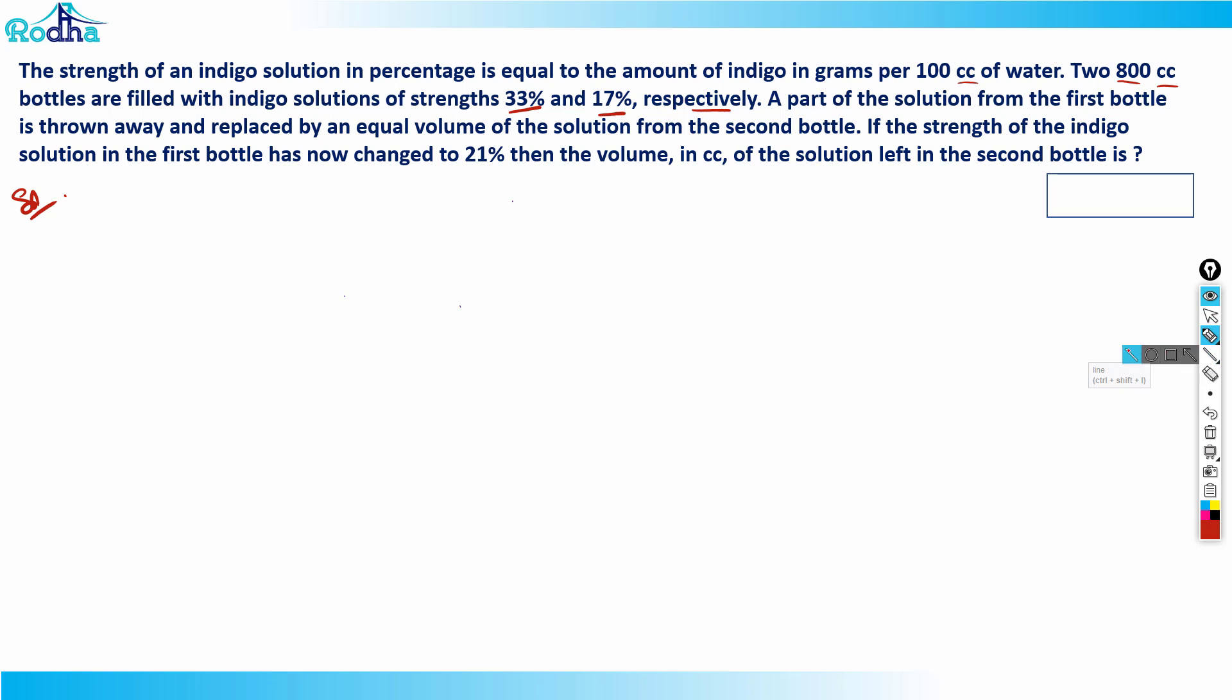Let's analyze this case. We have two bottles here, both 800 cubic centimeter bottles filled with indigo solutions. The first one is 33% and the second is 17%. A part of the solution from the first bottle is thrown away - let's say x ml - and it's replaced by an equal volume of solution from the second bottle. So from the second bottle, x ml is added here, and now the strength has become 21%.